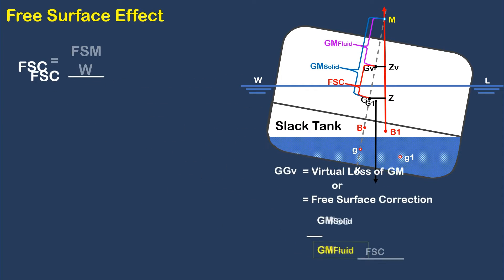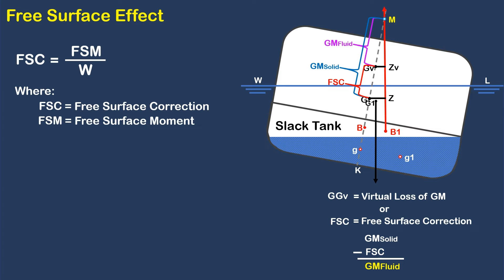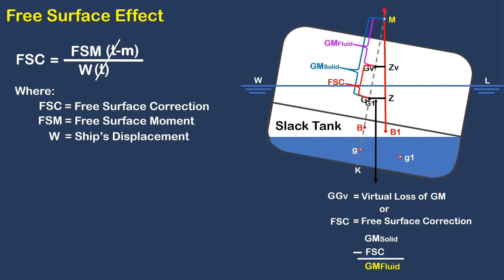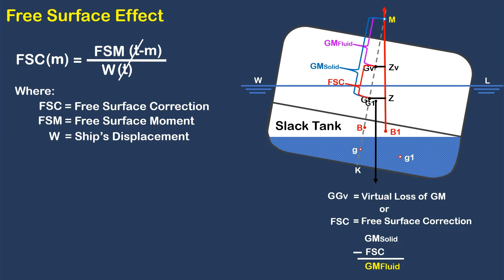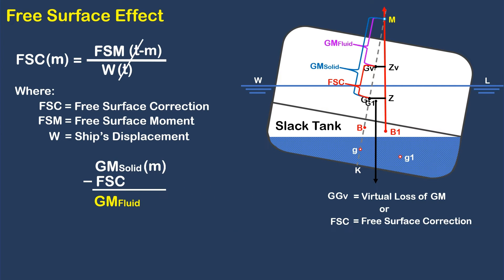This is the formula to determine the free surface correction: FSC equals FSM divided by W, where FSC is the virtual loss of GM or free surface correction, FSM stands for free surface moment, and capital W is the ship's displacement. The unit of free surface moment is in ton meter, while the unit of displacement is in tons. If both units of ton are cancelled, the remaining unit is a meter — that is why the unit of free surface correction is in meter. Since the unit of GM is in meter, subtracting the free surface correction gives the fluid GM also in meters.